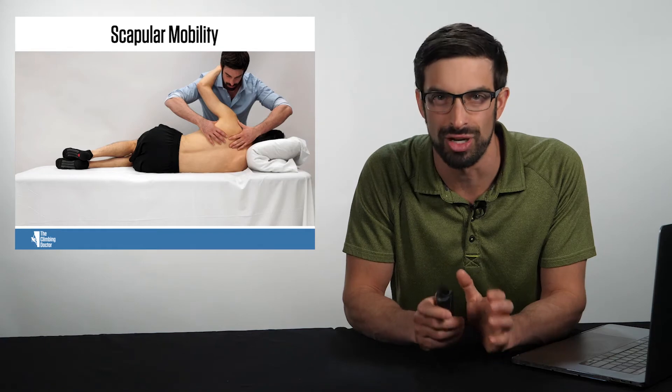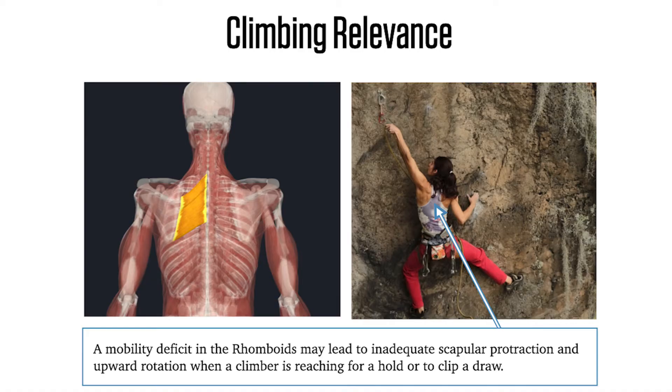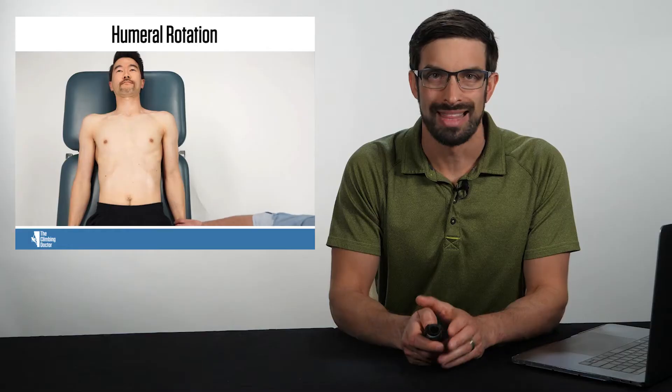A mobility deficit in the rhomboids may lead to inadequate scapular protraction and upward rotation when the climber is reaching for a hold or looking to clip a draw.